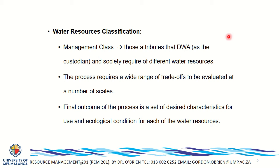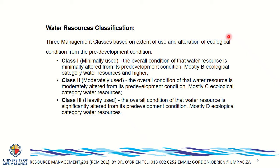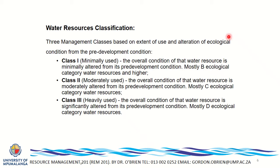The next thing is to come up with a class: Class 1 is minimal use, Class 2 is moderate use — the balance between use and protection — and Class 3 is heavy use. For Class 1, most ecological categories are a B or better. For Class 2, most ecological categories are C or better. For Class 3, most ecological categories are in Class D. We use a classification system from A to F to classify the state of our resources.